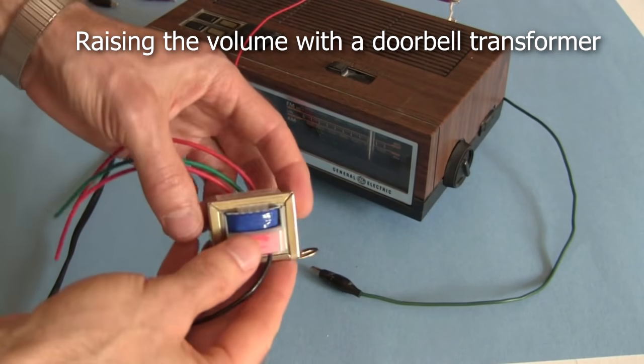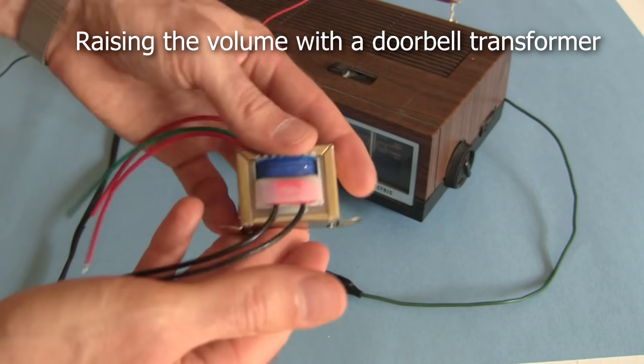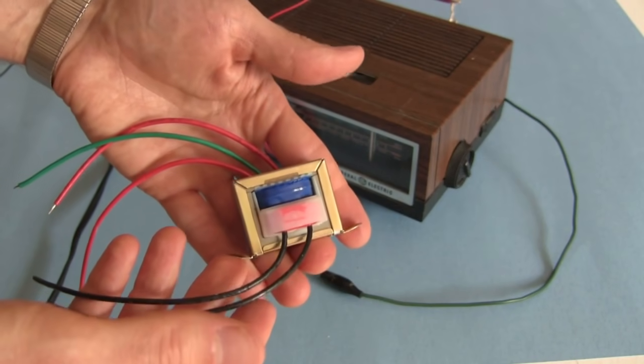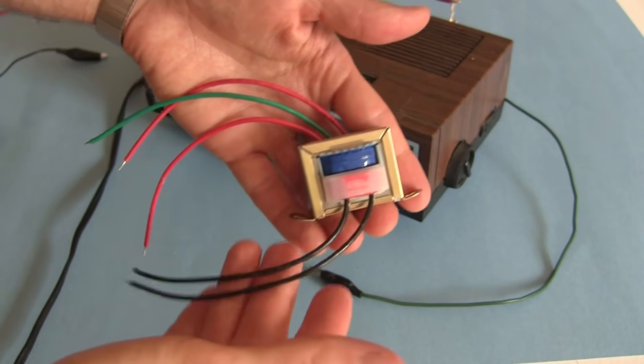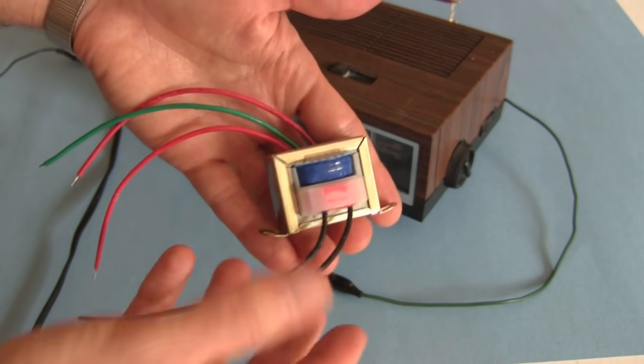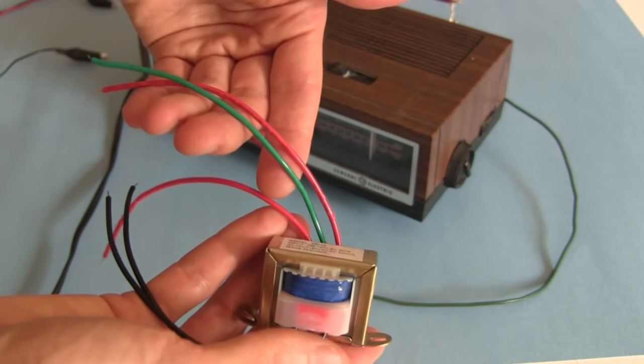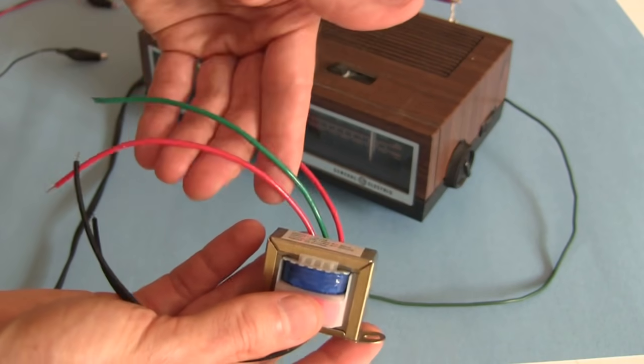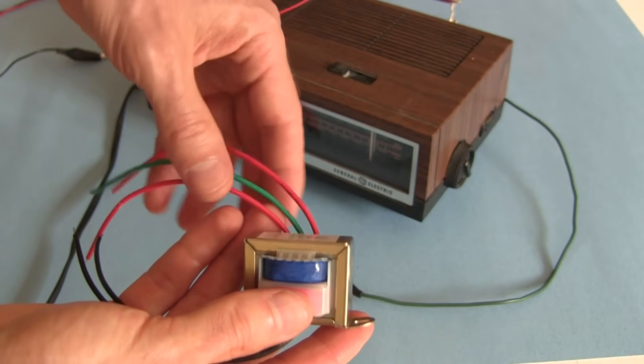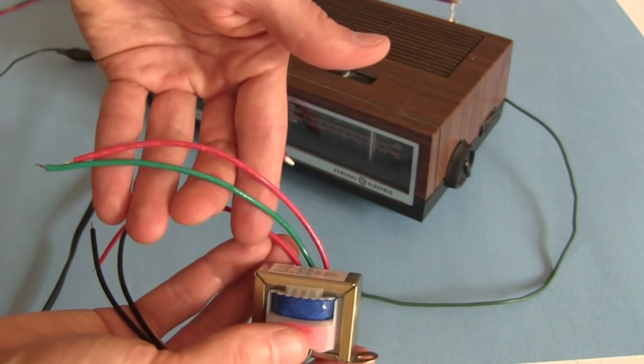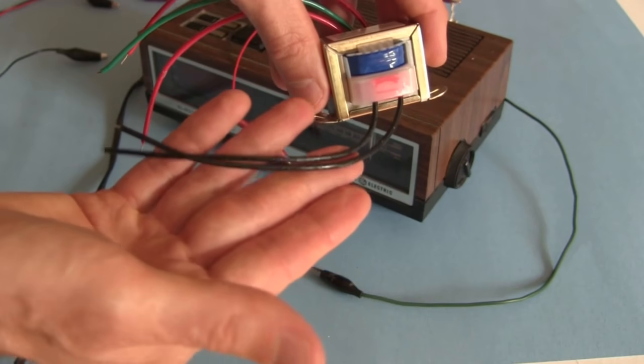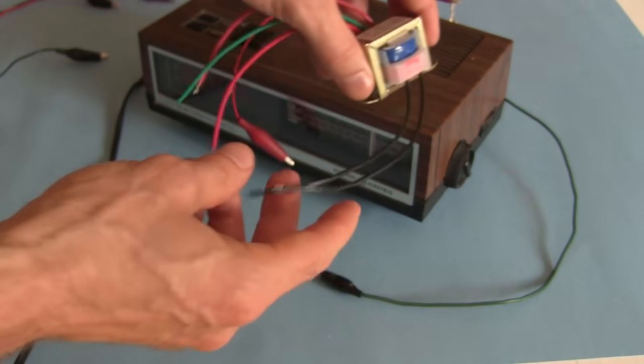So to get it louder I'm going to increase the voltage, and to do that I'll use a transformer. This is a doorbell transformer which you can get from places like Home Depot and Lowe's. Normally you put 120 volts AC on this side and get something like 6 volts on this output side. But I'm going to do the opposite. I'm going to put the input, the radio, on this side, then take the output to the crystal on this side.